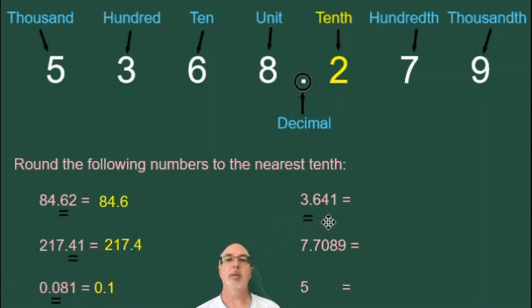The next example is 3.641. The six is in the tenth position. The number after it, to the right of it, is a four, which is smaller than five, so we will round down. We have 3.6 as our number rounded to the nearest tenth.